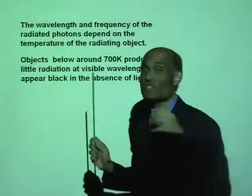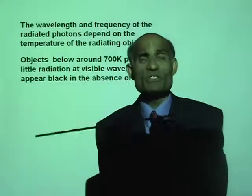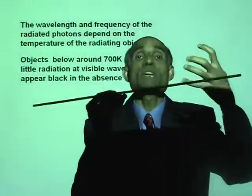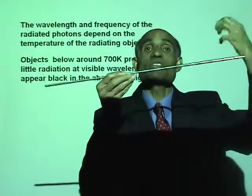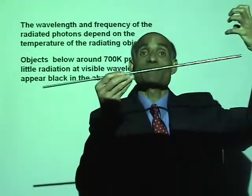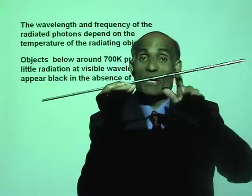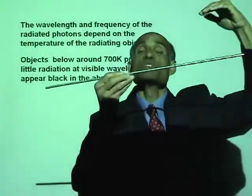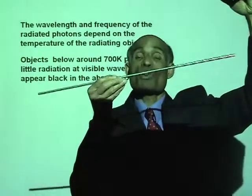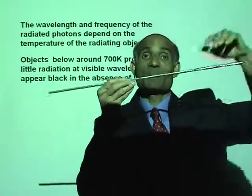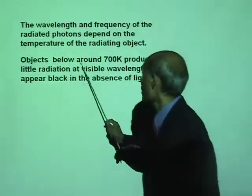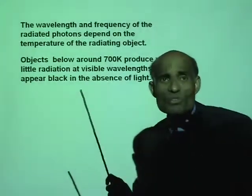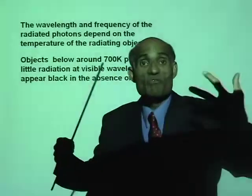If you heat it to about 700 degrees Celsius, this will turn red and will begin to emit infrared radiations or heat radiations. In order that this may emit visible light, you may have to heat it to about 3,000 to 4,000 degrees Celsius. So objects below around 700 Kelvin produce very little radiation that are visible.